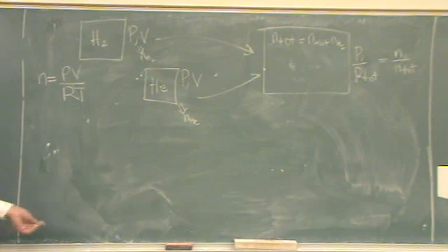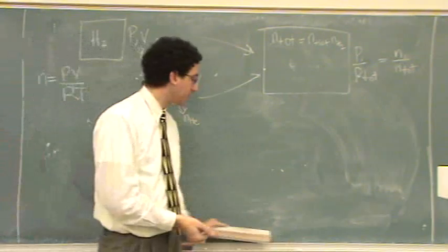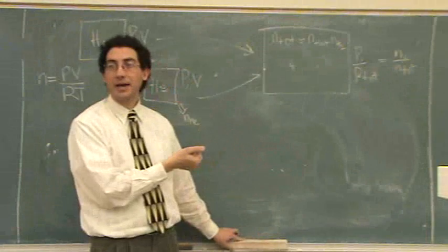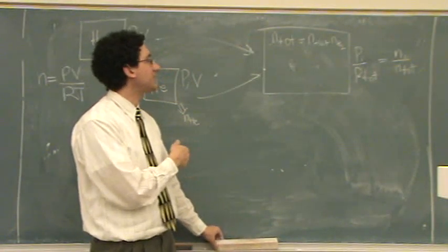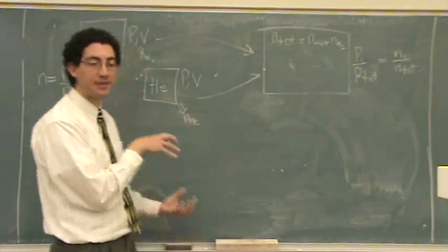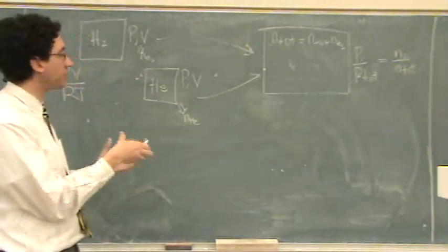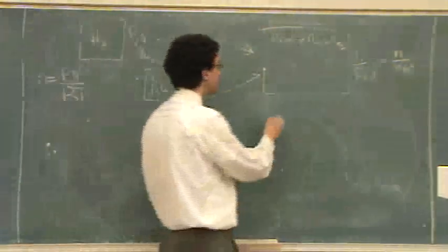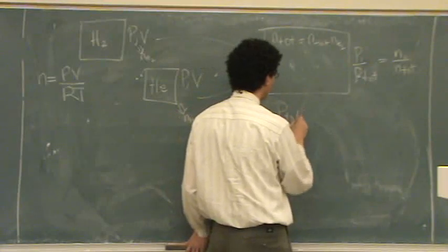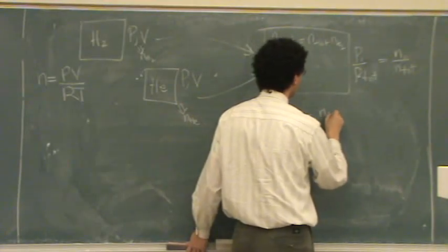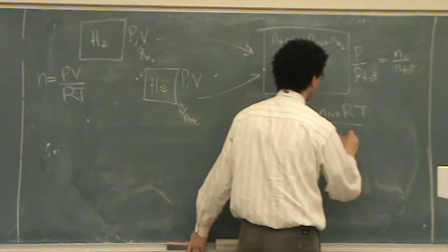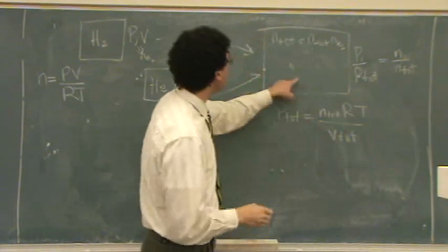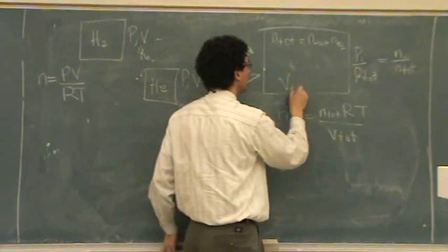Then the total pressure can come out of two different ways. If this is somehow open to the atmosphere, they use atmospheric pressure. If it doesn't seem like some sort of compressed gas, then you could say P total equals N total R T over V total. In which case, V total is the size of this tank.